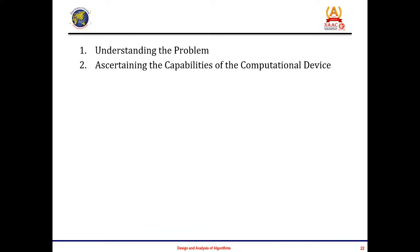The second fundamental is ascertaining the capabilities of a computational device. Once you are thorough in understanding the problem statement or algorithm, we need to know the capabilities of the computing device. This can be done by knowing the type of architecture, speed, and the memory availability.